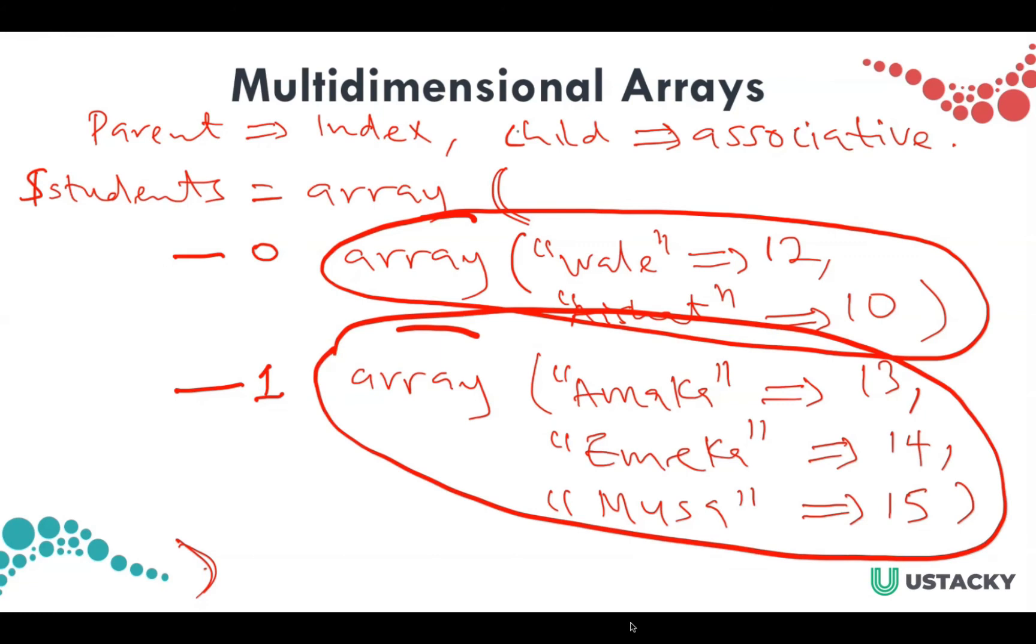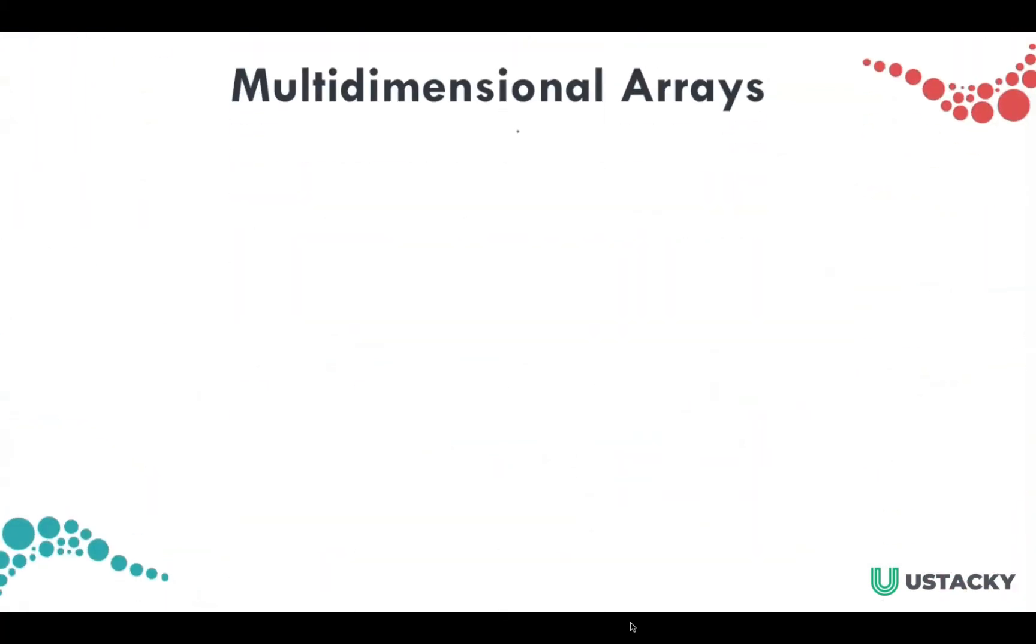So how do we get each of the elements in this array? To get the elements we have the parent and child.